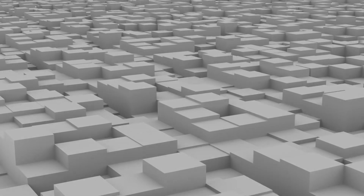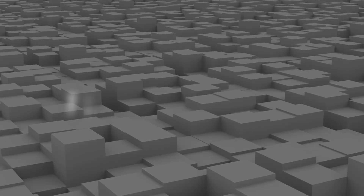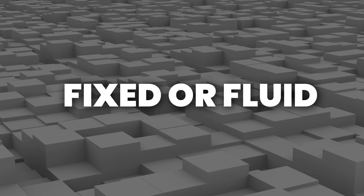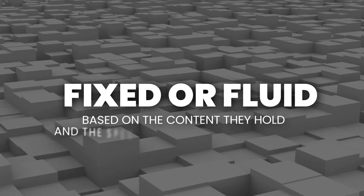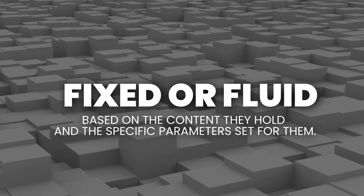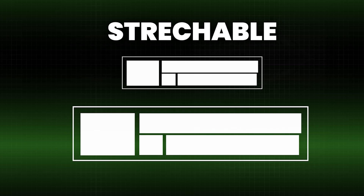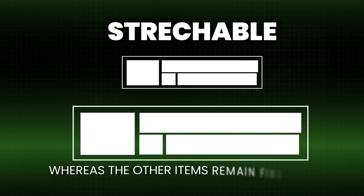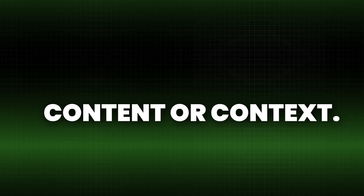The boxes in this context can be either fixed or fluid based on the content they hold and the specific parameters set for them. Observe how the black and gray containers are designed to be stretchable, adapting to their content, where the other items remain fixed in size regardless of the content or context.